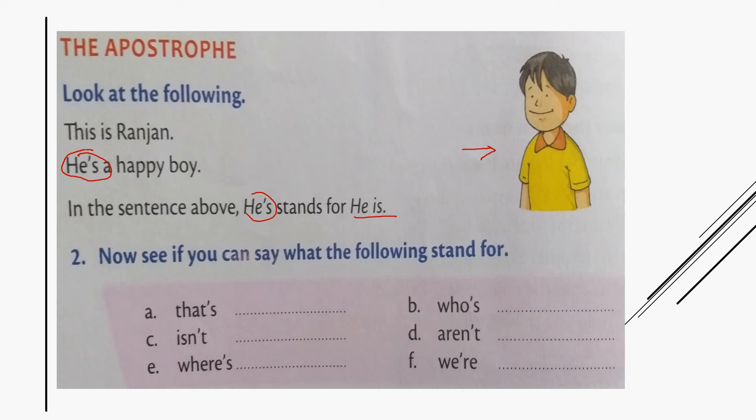Now see if you can say what the following stand for. We have to identify what these words are and write them in full form. So what is this? 'That's' - yes, that apostrophe S will be 'that is'. B: what do you think, children? 'It's' - who is? No, 'it is'. What is C? 'Isn't' - is not.